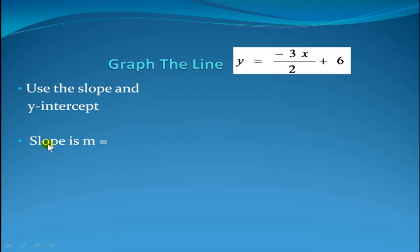Let's recall that slope is equal to m. In this case, it's negative 3 over 2. How do we know? Well, we look at the leading coefficient in front of the x.